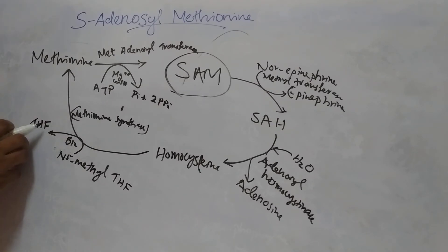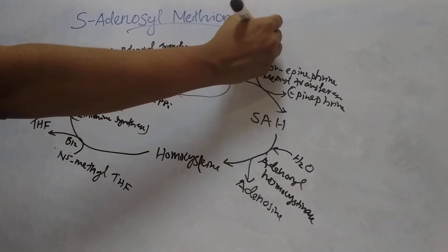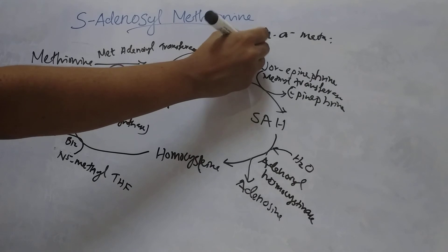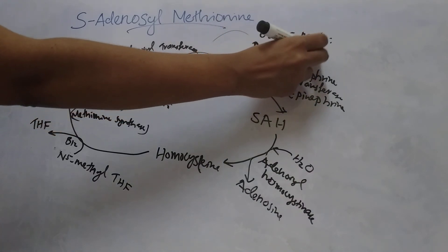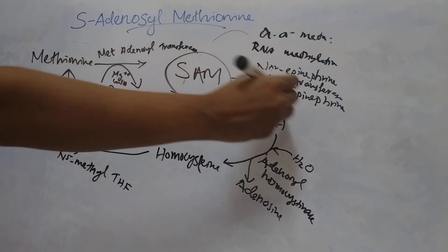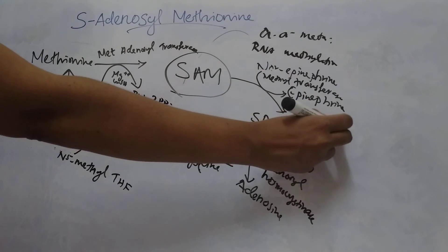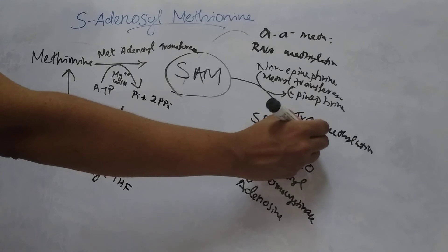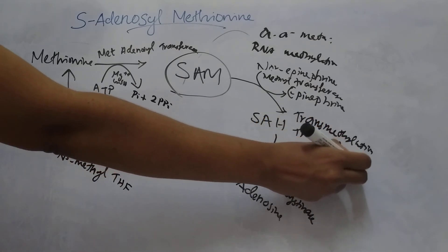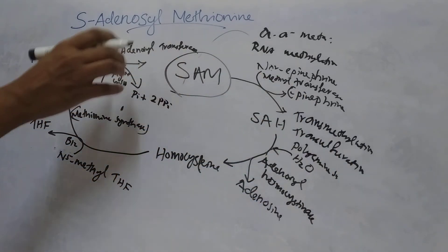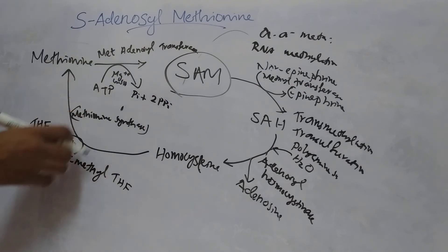S-adenosyl methionine serves as a regulator of a variety of processes including amino acid metabolism and RNA methylation. It also serves as a cofactor in transmethylation, transsulfuration, and polyamine synthesis.